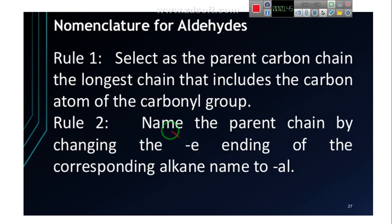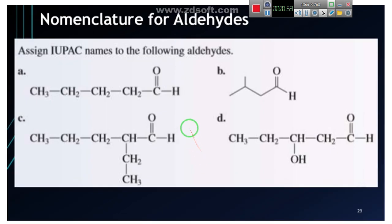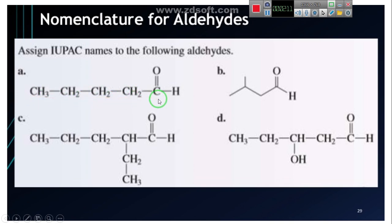Nomenclature of aldehydes: we obtain the name by eliminating the suffix -E from the alkane and changing it to -AL. Using the IUPAC nomenclature system, we first choose the longest chain, and the carbon holding the C=O functional group must receive the least number — in an aldehyde, that carbon is always number one.